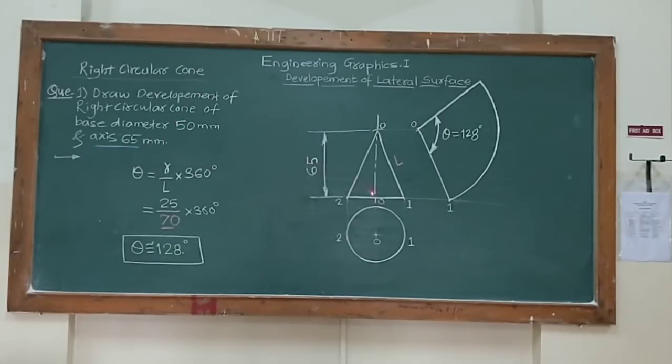So when you need to draw development of cone, first you need to draw top view as a circle. So diameter is given 50 mm. So 50 mm diameter I have drawn a circle.